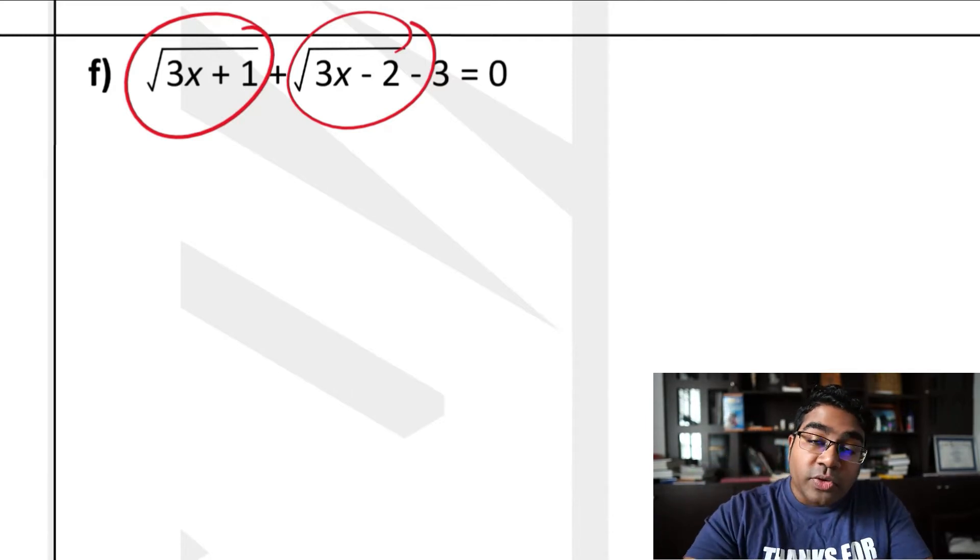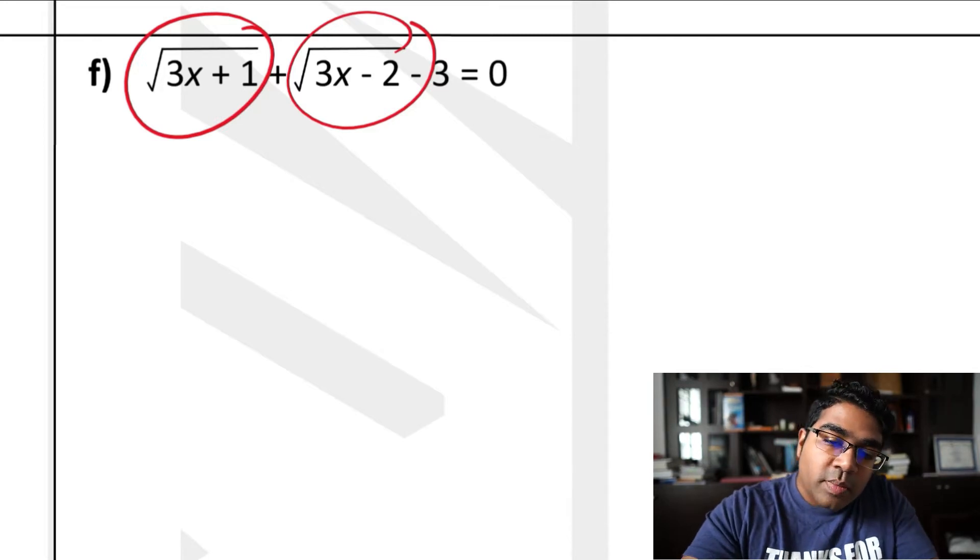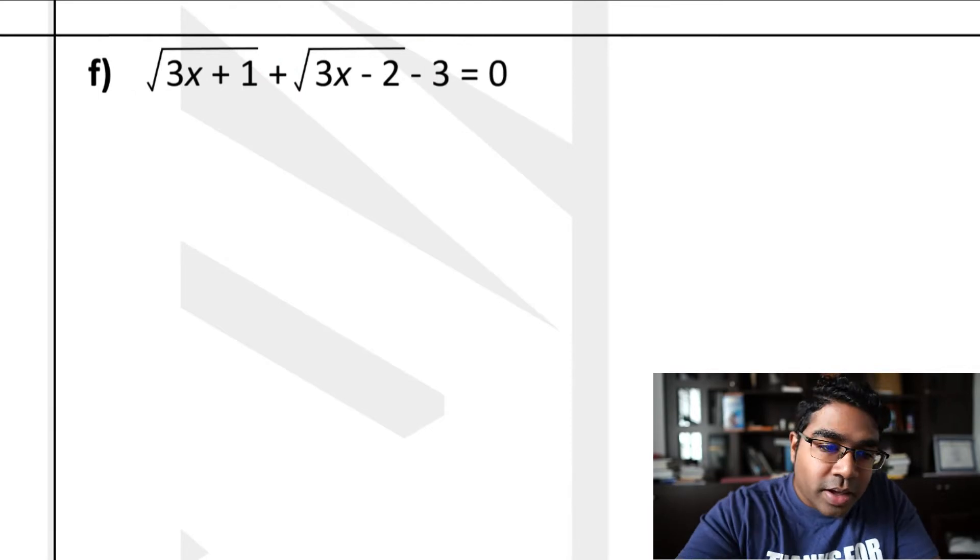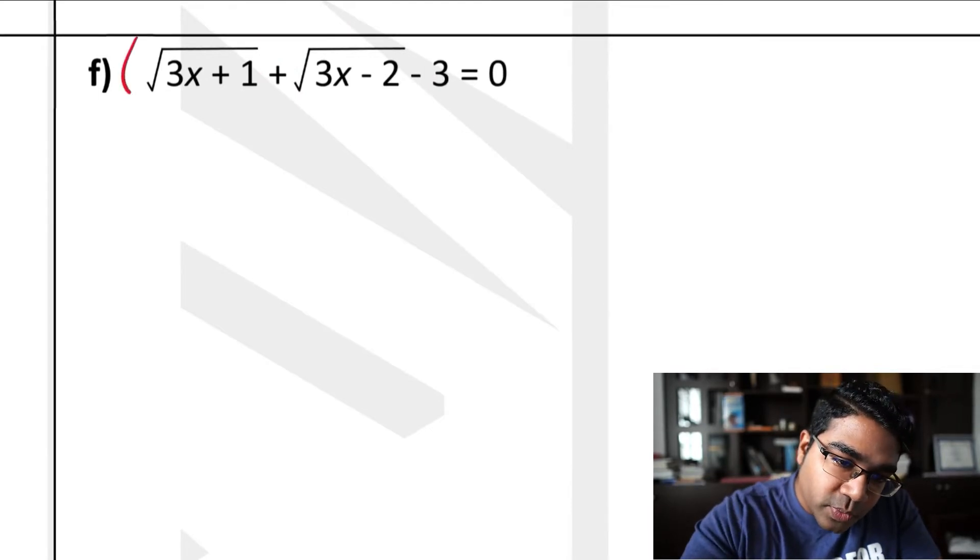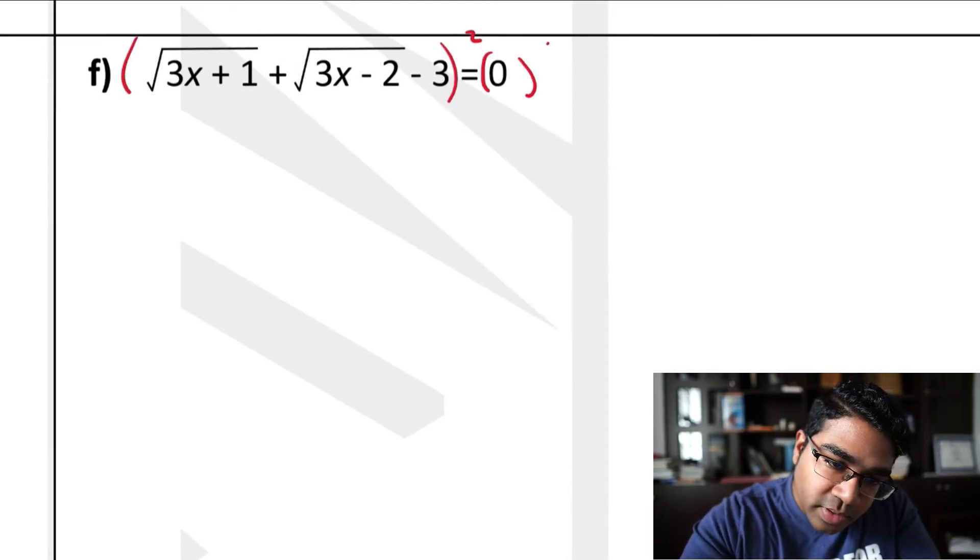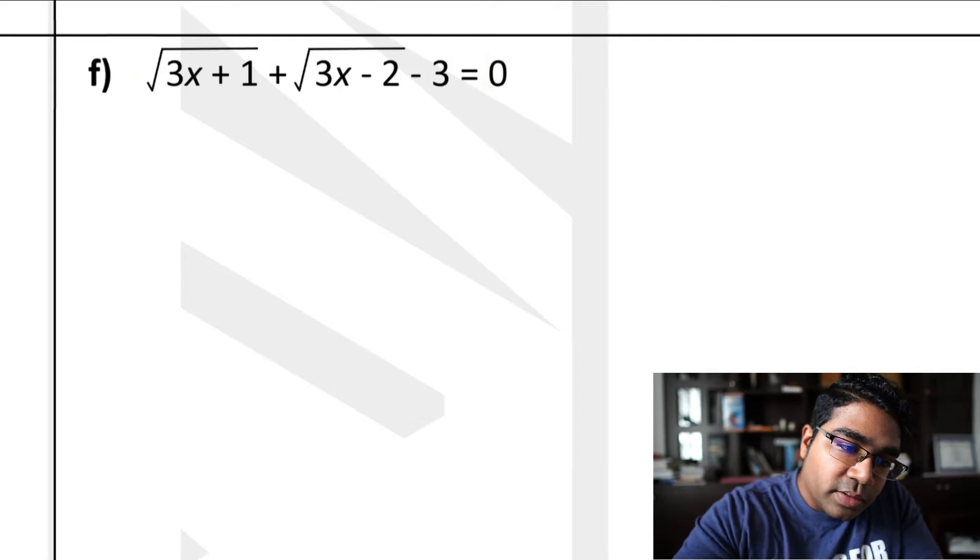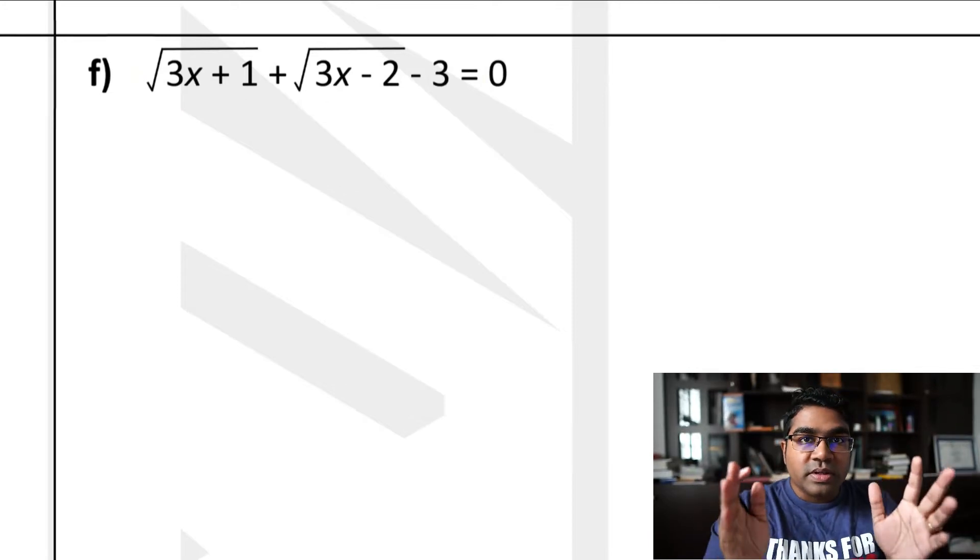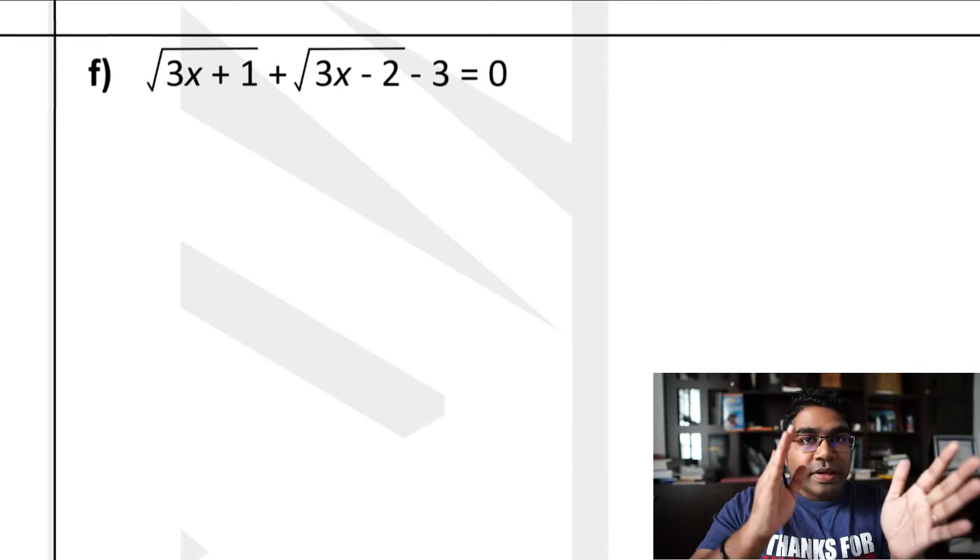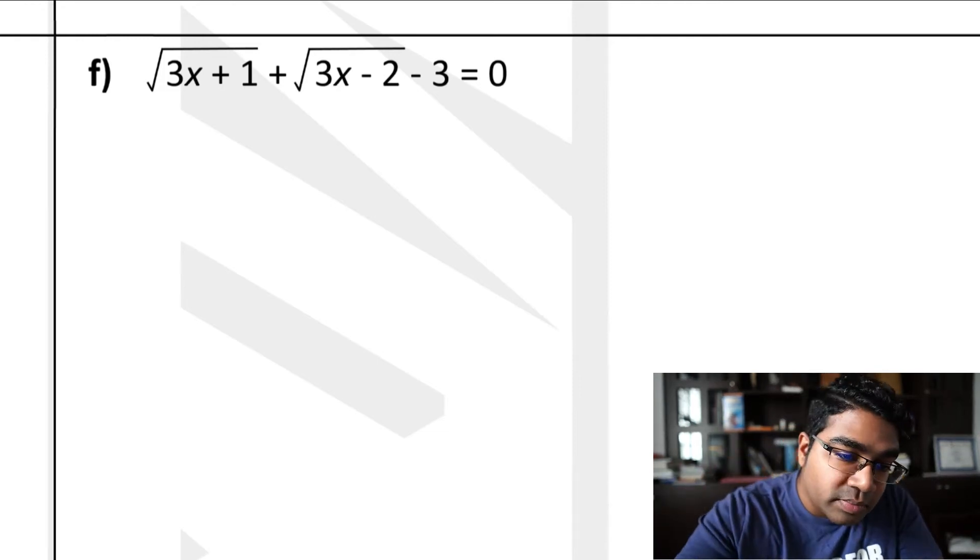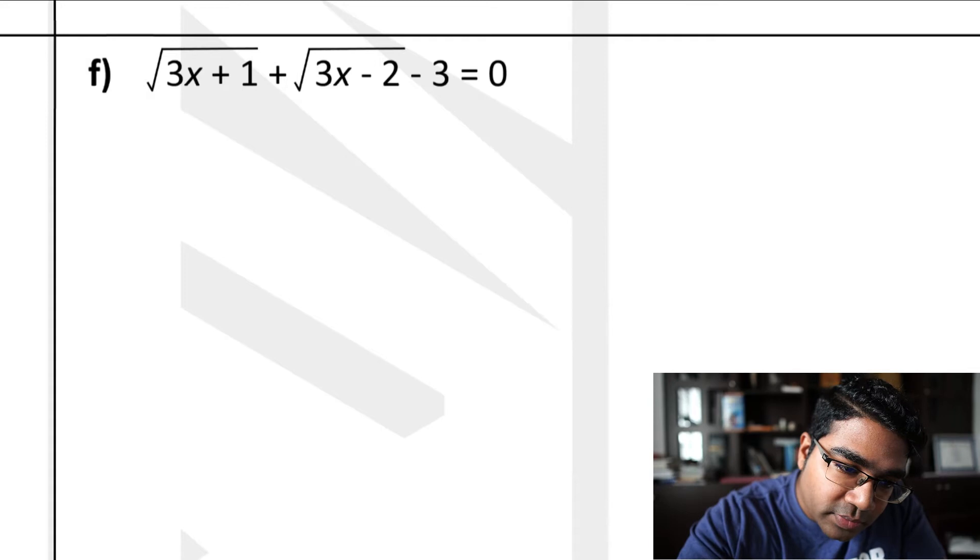Before you square, you can already square the equation as it is. However, this would mean you have to square this side and this side. Now this can be quite a complicated list of working. So instead of that, what we want to try to achieve is only one square root on each side of the equation. This way, when you square it, it becomes much simpler.